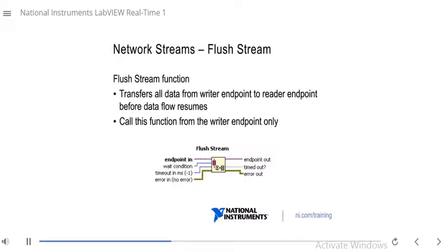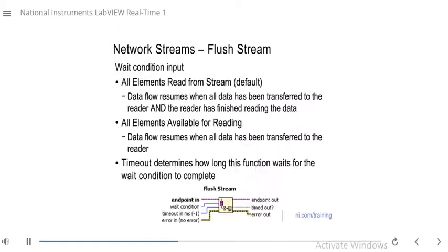The flush stream function transfers all the data from your writer endpoint to your reader endpoint before data flow resumes. This function is called from the writer endpoint. The default wait condition input is all elements read from stream. If you choose this option, data flow resumes only when all data has been transferred to the reader and the reader has finished reading the data.